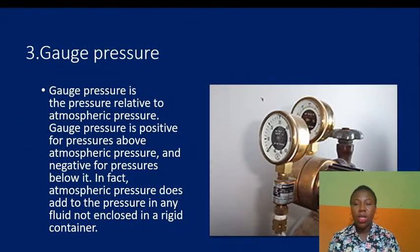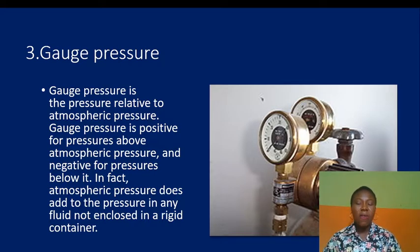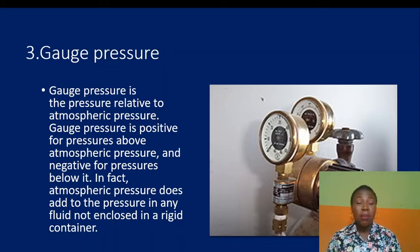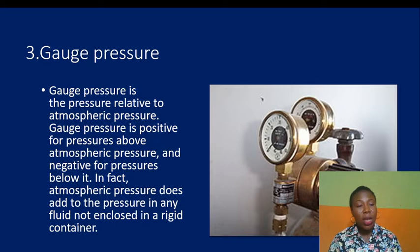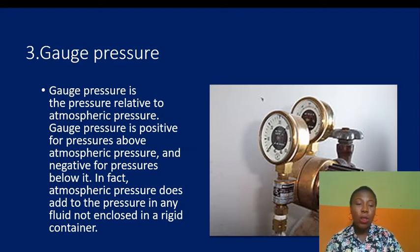Gauge pressure is the pressure relative to atmospheric pressure. It is positive for pressures above atmospheric pressure and negative for pressures below it. Atmospheric pressure does not add to the pressure in any fluid not enclosed in a rigid container. An example is a gas cylinder, also used in mechanic workshops by panel beaters. They check the gauge to see the amount of gas in the cylinder and ensure it is balanced before lighting the tube that produces the flame used to weld or merge metals together.